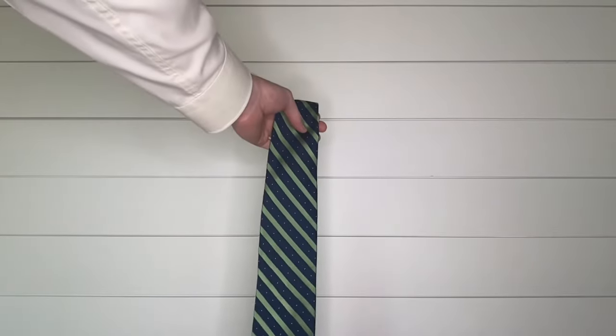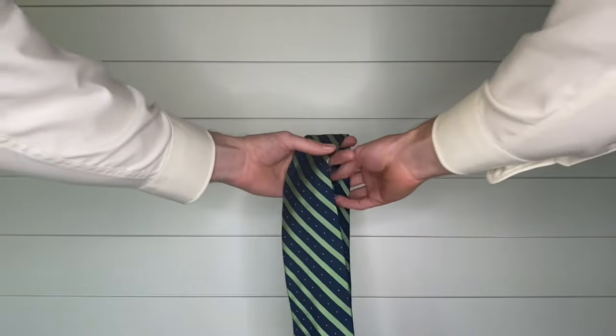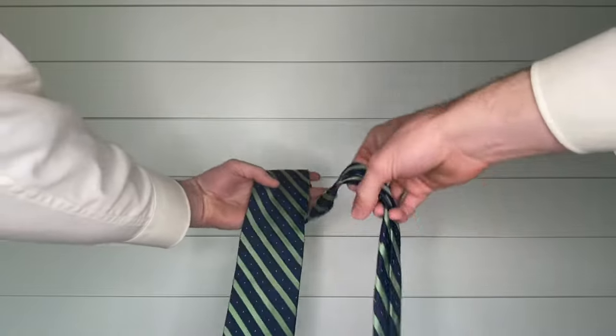To do the hand wrap tie, place the tie over your hand with about 8 inches of the tie hanging below.